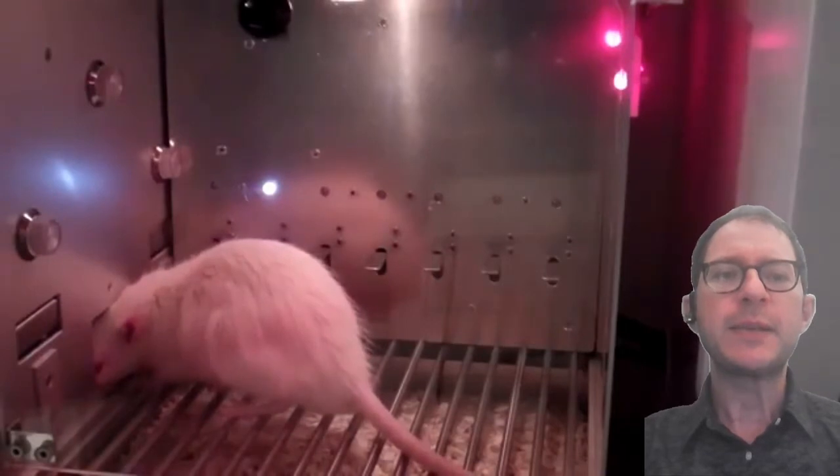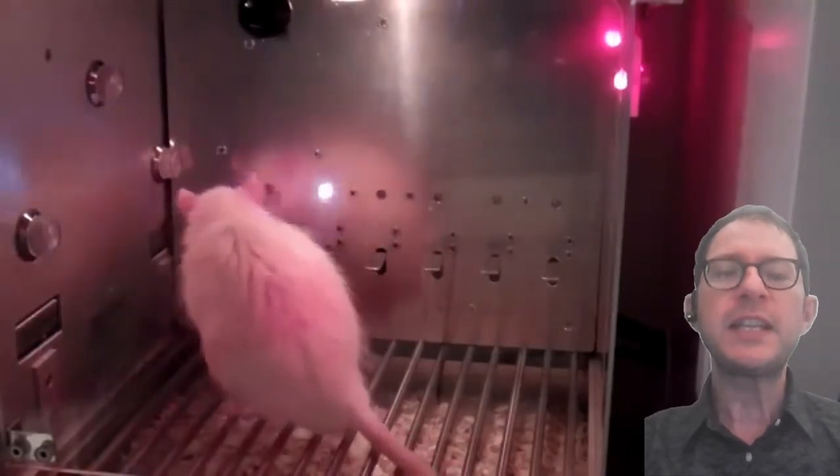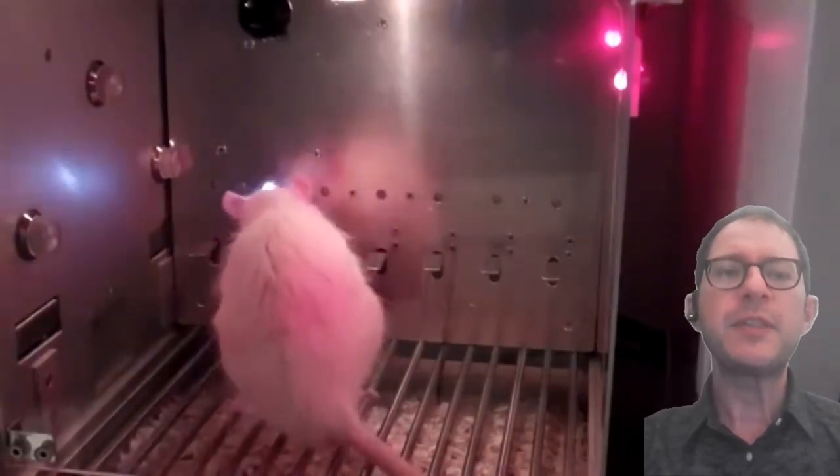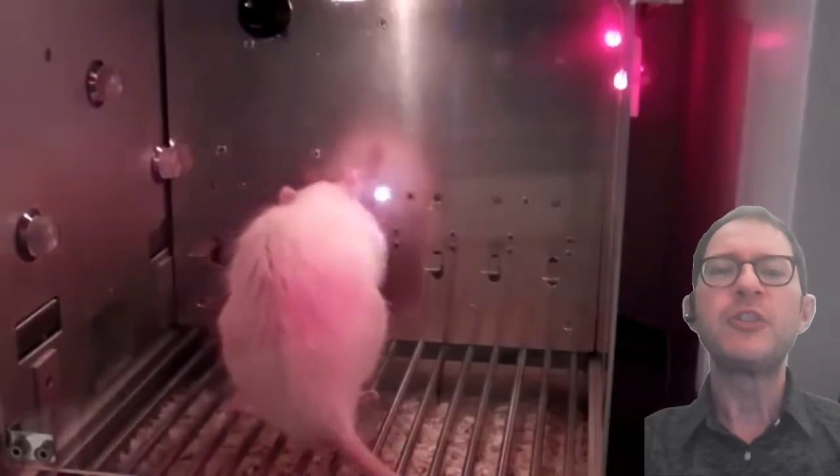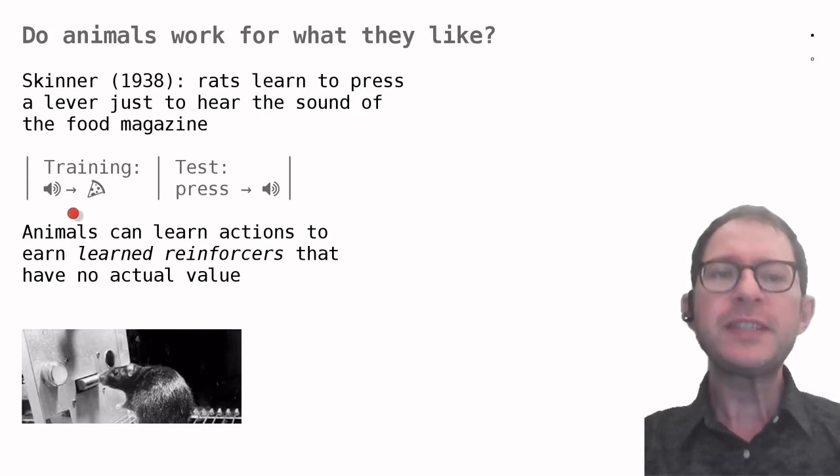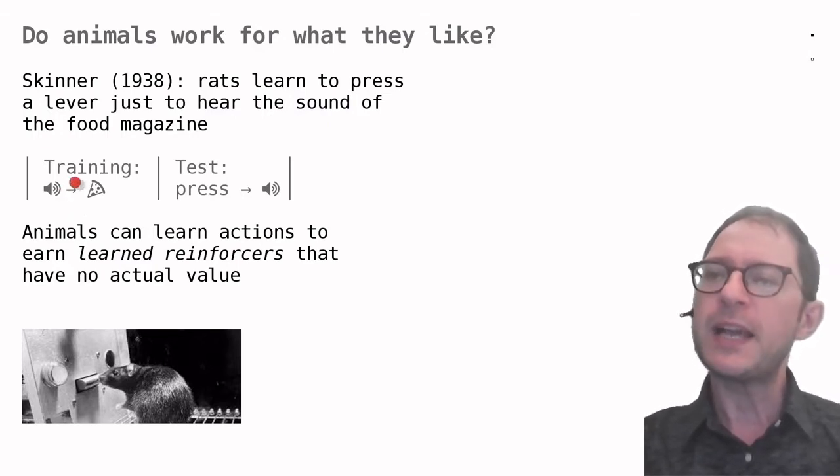Skinner realized that animals will learn that this sound is a signal for food, and asked whether they could learn to perform an action just to hear the sound. So he set up the following experiment. He first trained rats to eat from the food magazine, as usual. In this phase, there was no lever that the rat could press. Rather, the rat just experienced the sound of the food magazine operating, followed by the delivery of food. Sound followed by food.